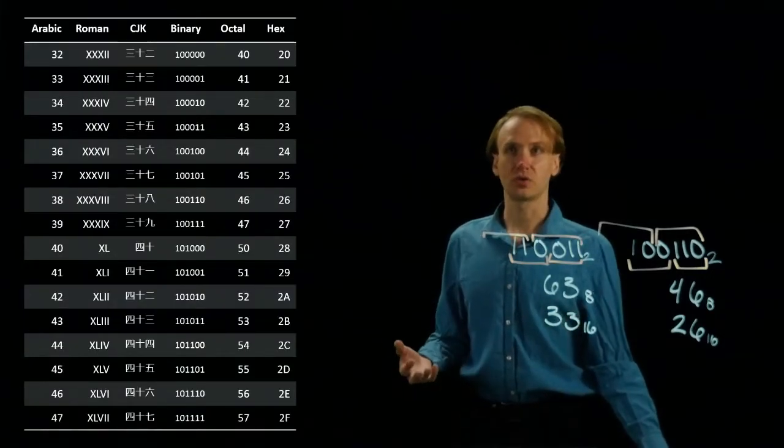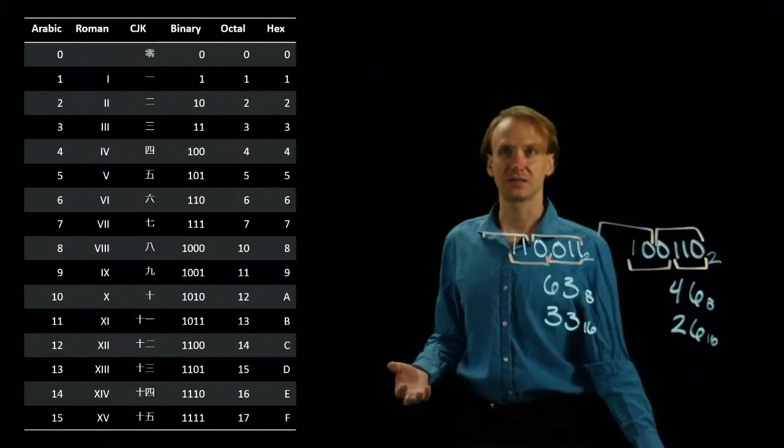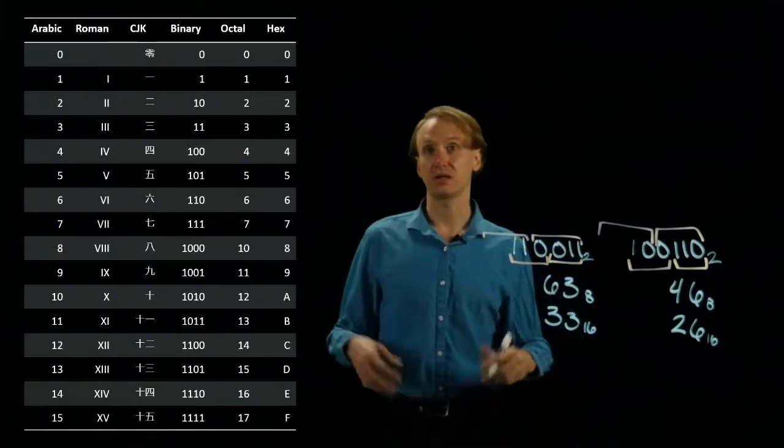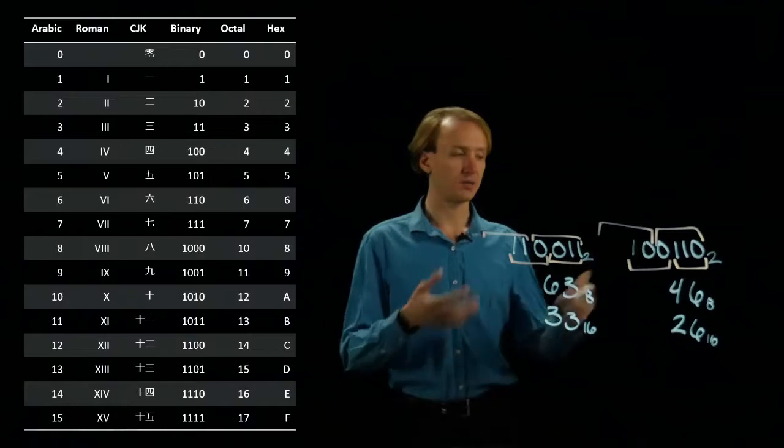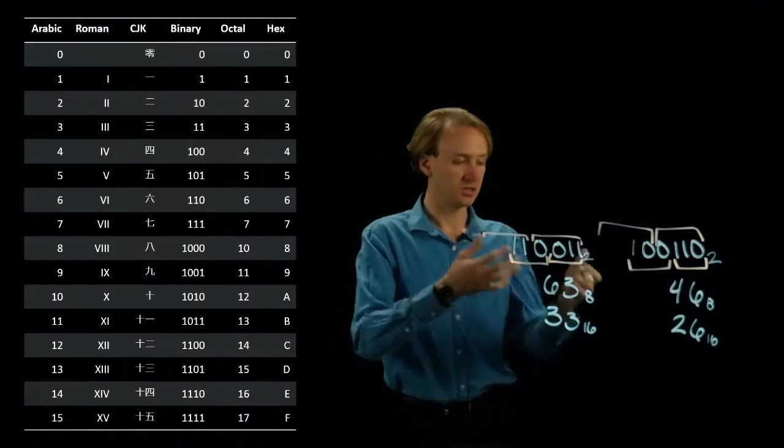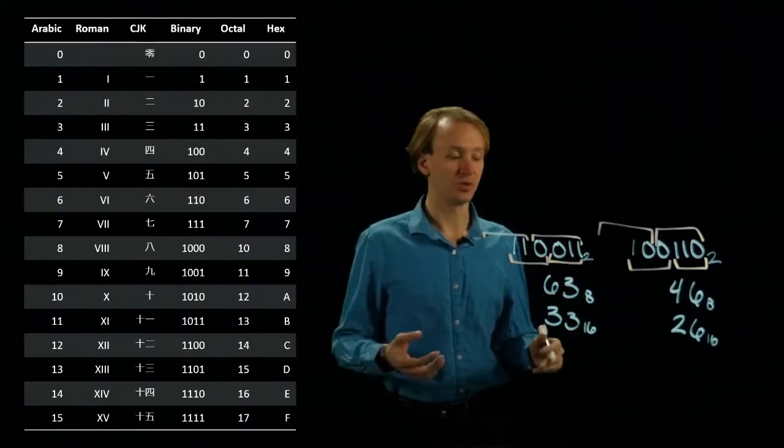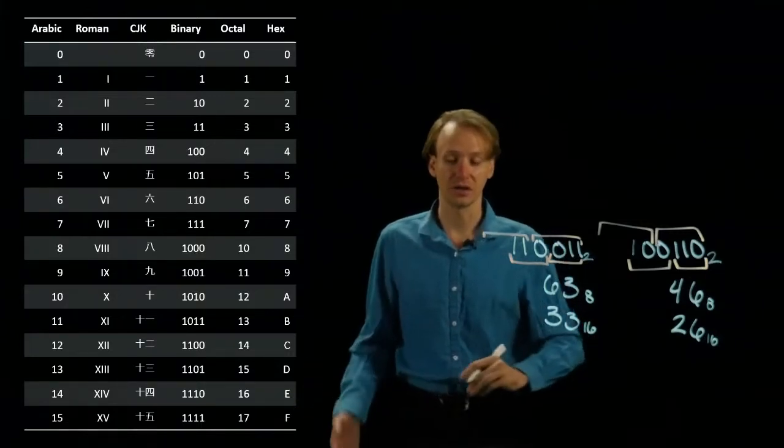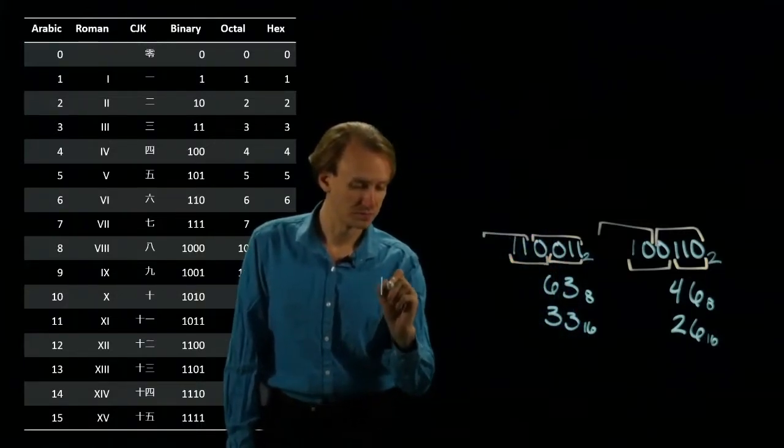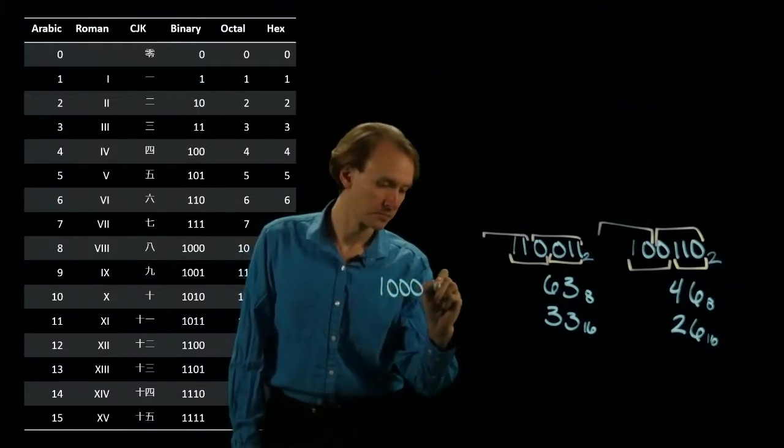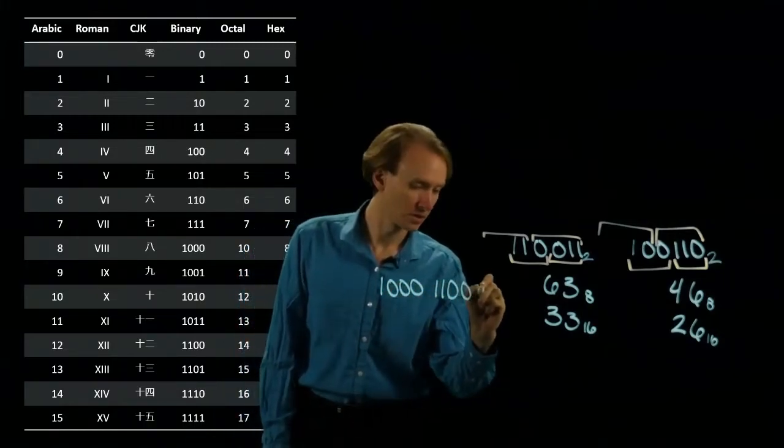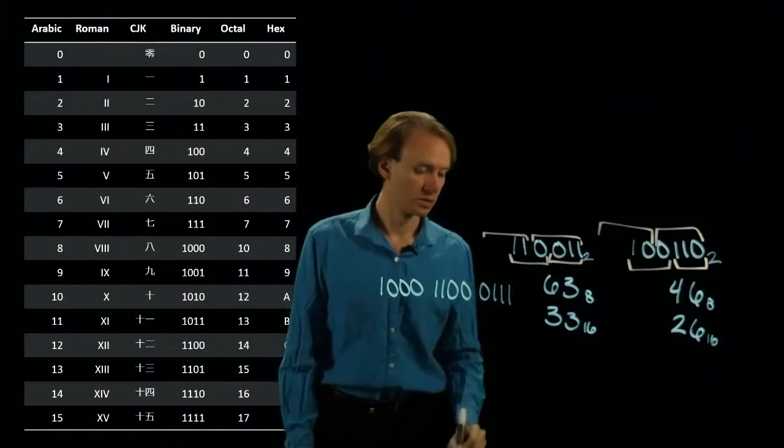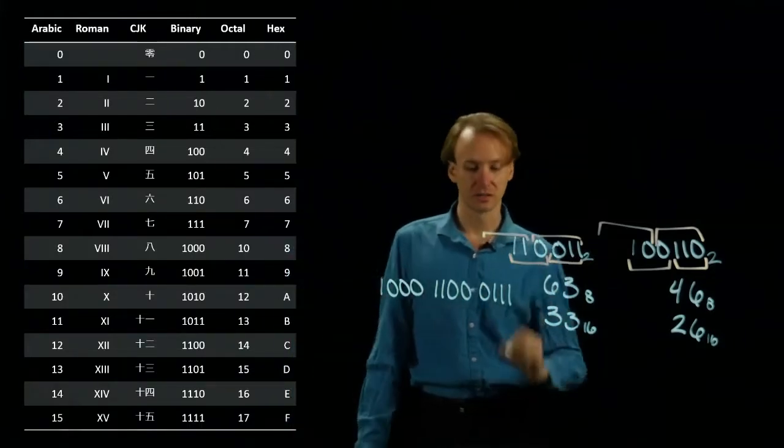And I can do this for numbers of any size I want. So I can take numbers that are really, really large, and I can apply this idea to converting to octal or hexadecimal without having to look back at that number line to verify that I've done my work correctly. So if I take a number like this, binary.